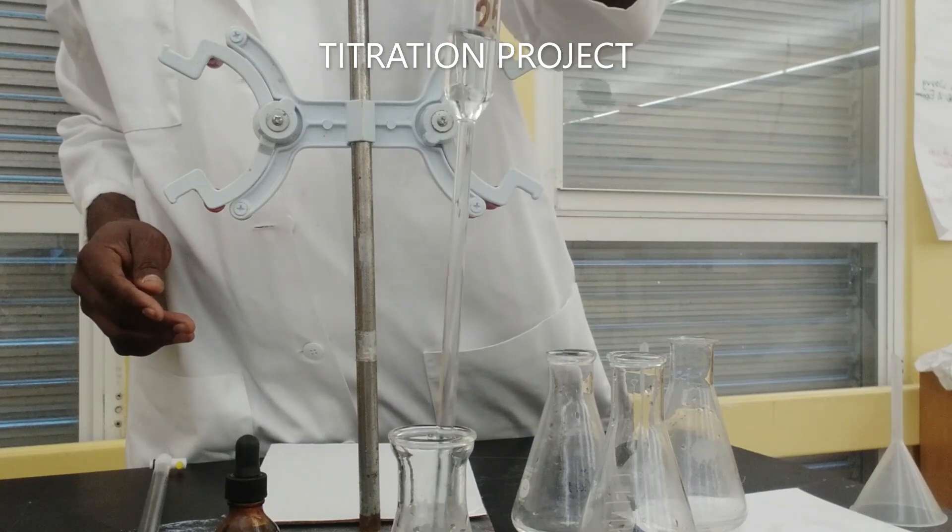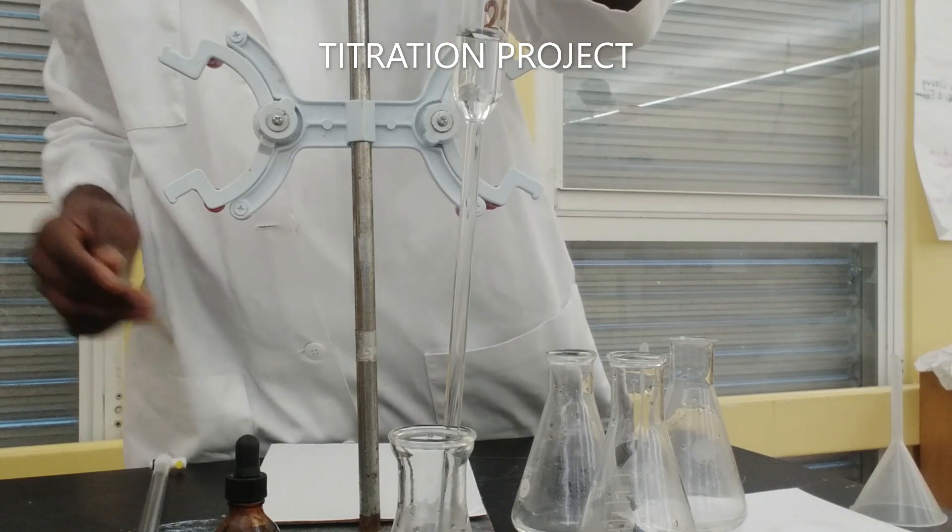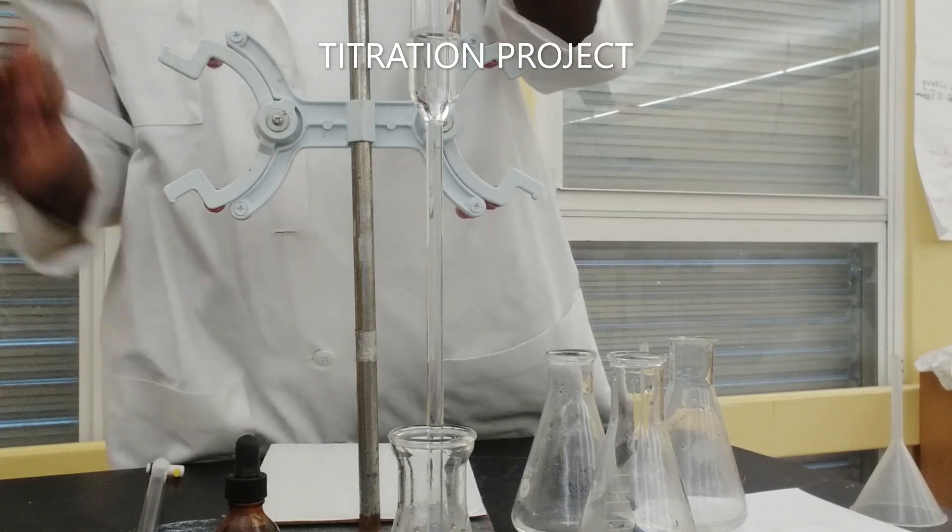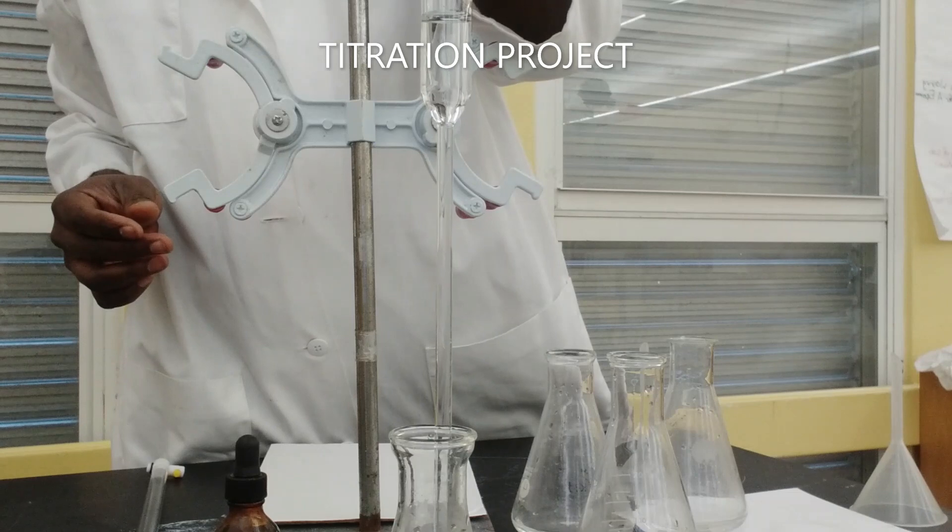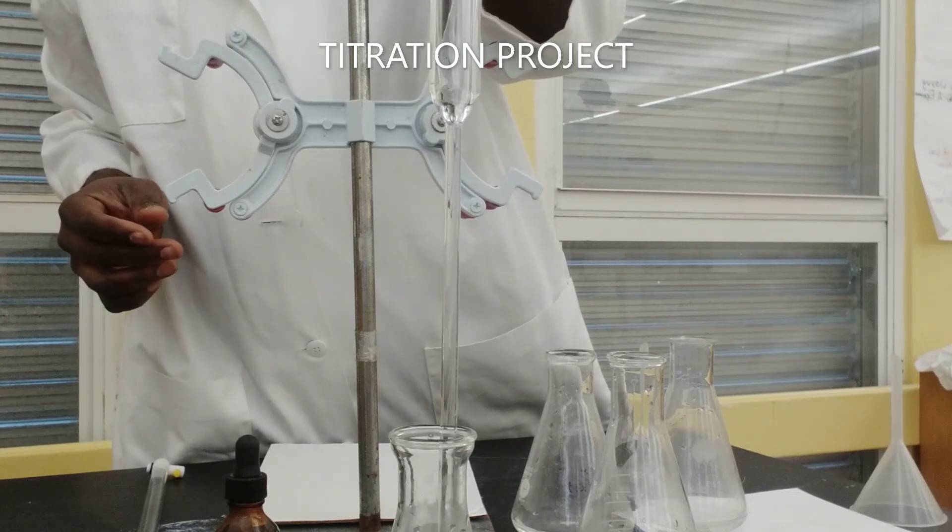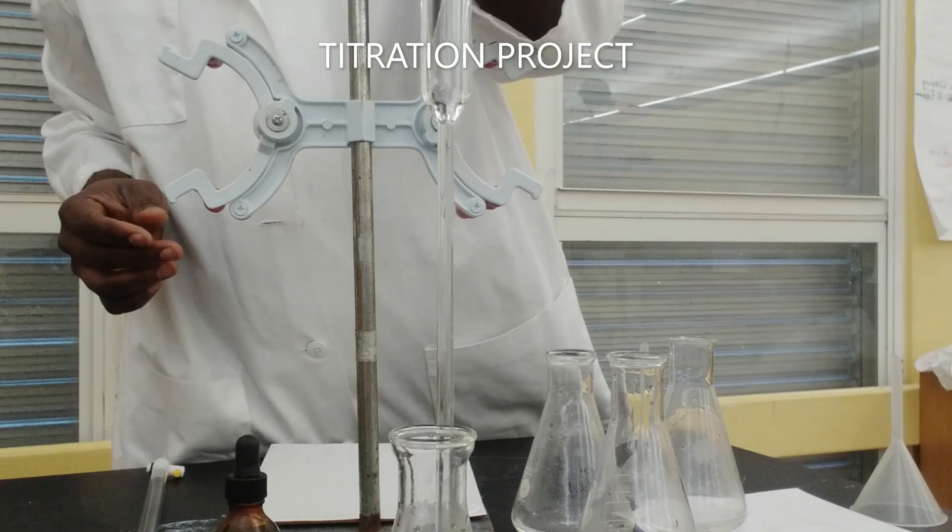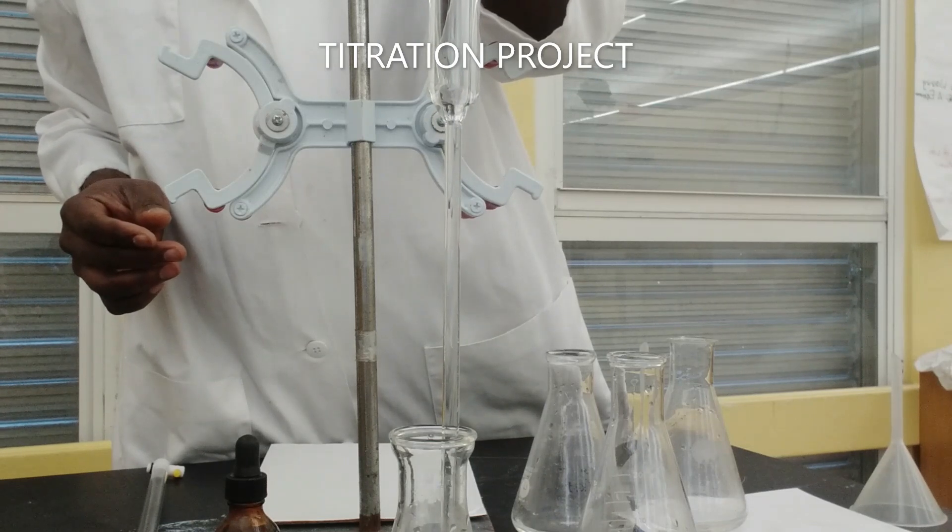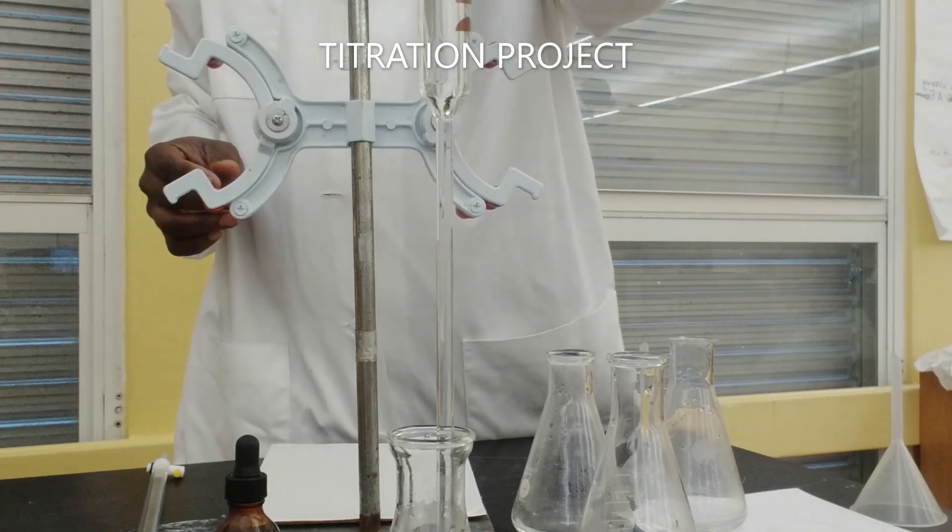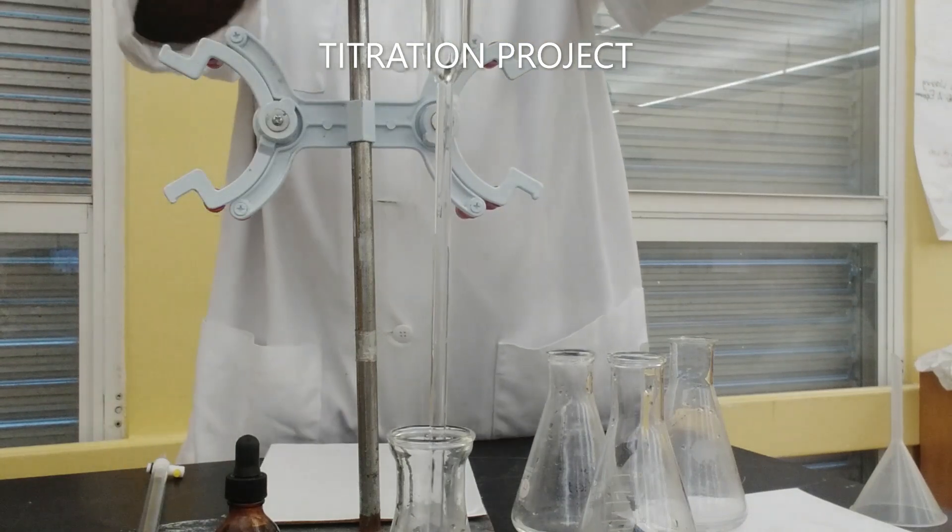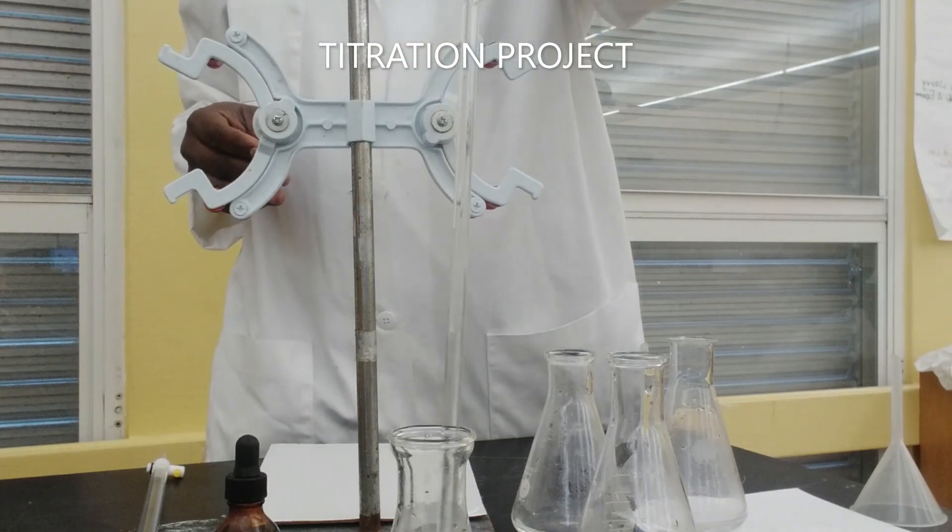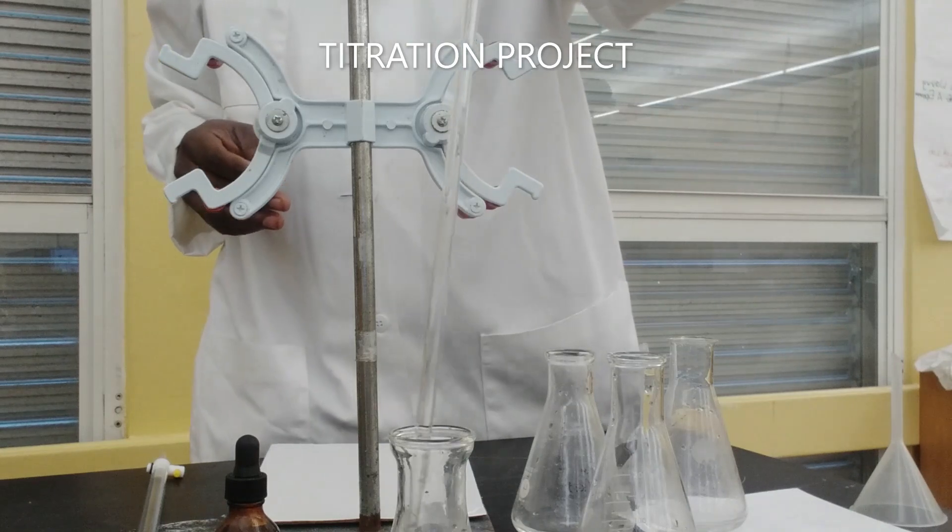Generally, the whole concept behind volumetric analysis experiments or titration experiments is that for acid-base, we just want to establish equimolar volumes. We want to figure out the equimolar volumes required for the acid to be completely neutralized by the base.